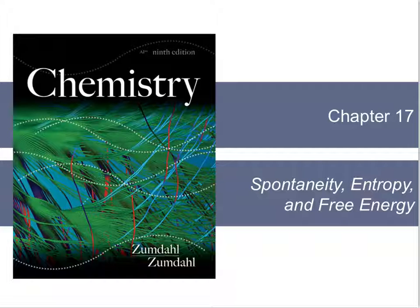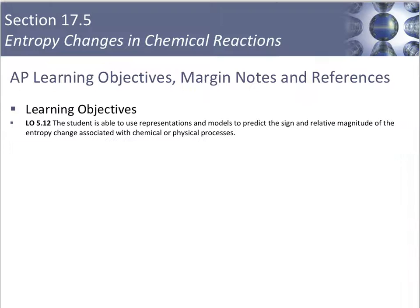Section 5 of chapter 17 is about entropy changes in chemical reactions. Learning target-wise, we want to predict the sign and magnitude of the entropy change associated with a chemical reaction.